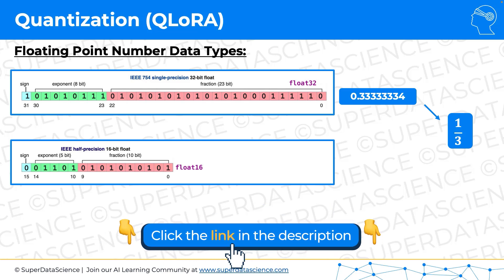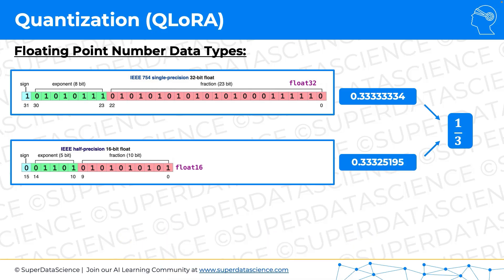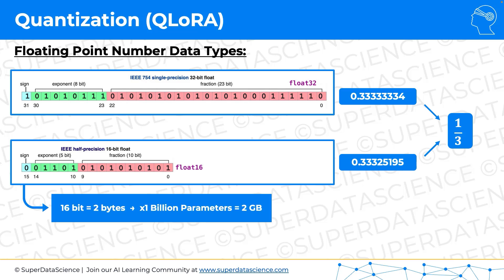With float16, the closest you can get is this value, and that's just because there's a memory limitation to how much precision float16 can store. So even though we lose some precision with float16, the preference with large language model training is to use float16, because even though it's less precise, it requires less space.